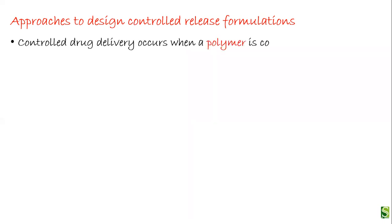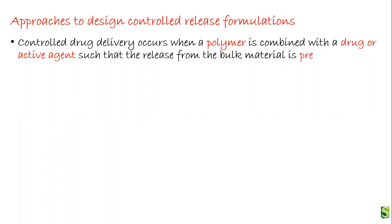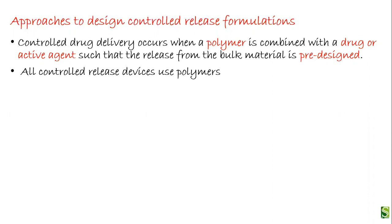Controlled drug delivery occurs when a polymer is combined with a drug or active agent such that the release from the bulk material is pre-designed. In formulation of controlled drug delivery systems, we are not going to use any other type of additive like disintegrant or binder. We are just going to use a polymer and an active agent. The release from the bulk material is already designed when we formulate the dosage form, and we control how the drug is released. All controlled release devices use polymers in the rate control mechanism.